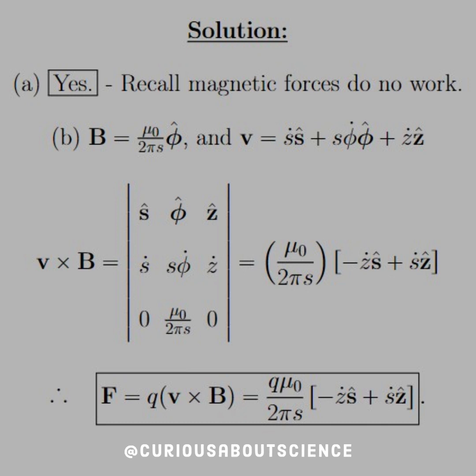You might recall these type of derivatives from classical mechanics. This will also apply for the acceleration, which we'll see in a second. We know that the force equals q times v cross B, so let's find the cross product. That yields mu naught over 2 pi s times negative z dot s hat plus s dot z hat. Multiplied by q, we get the force. Pretty straightforward.